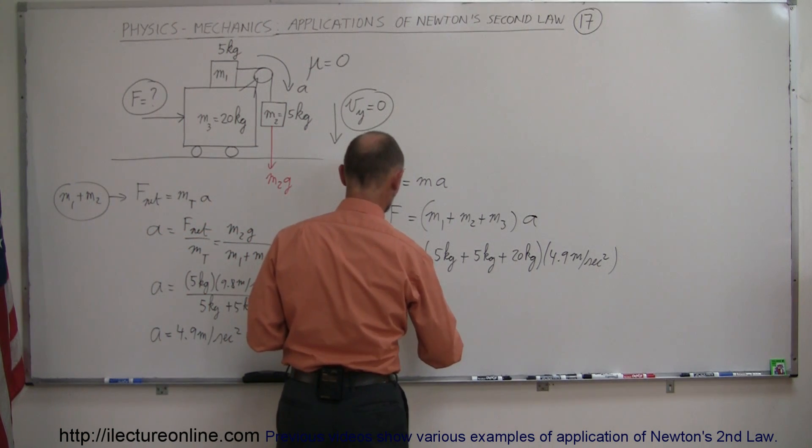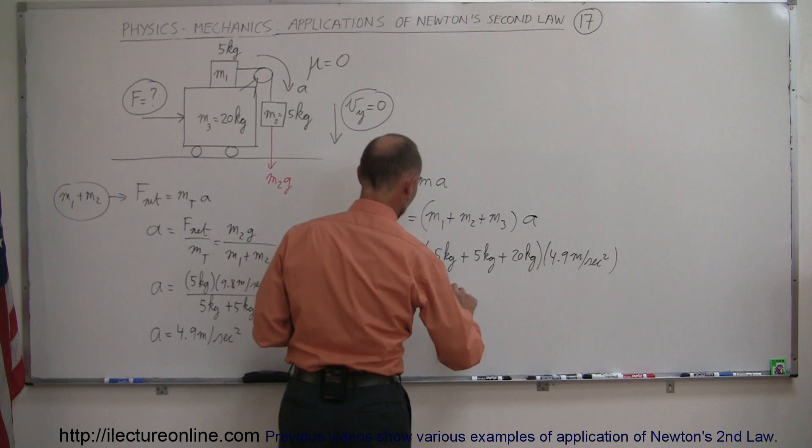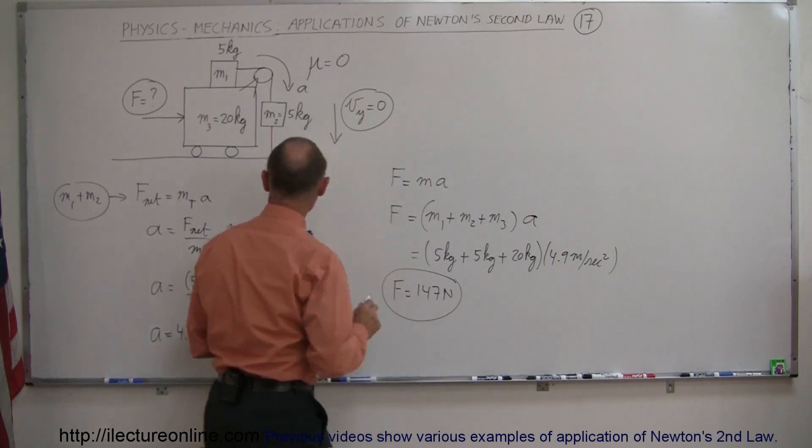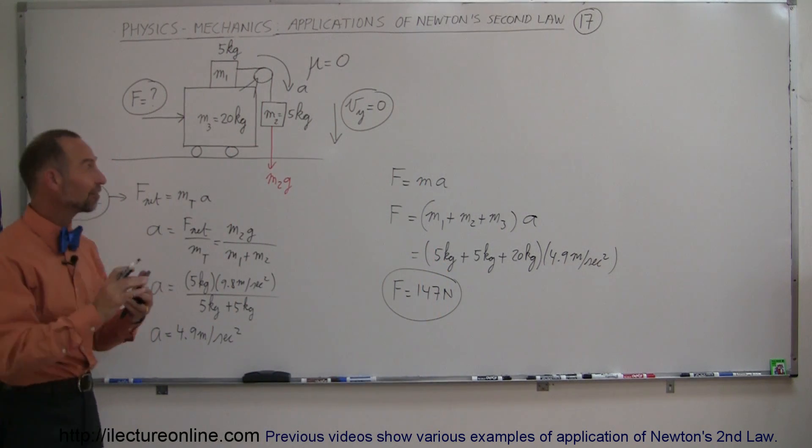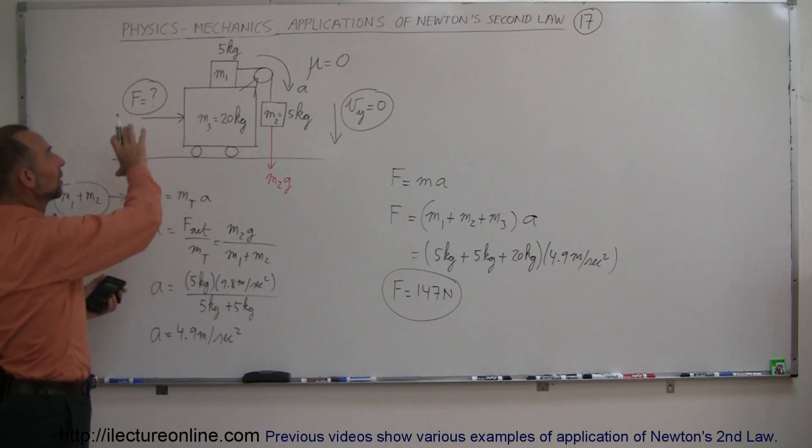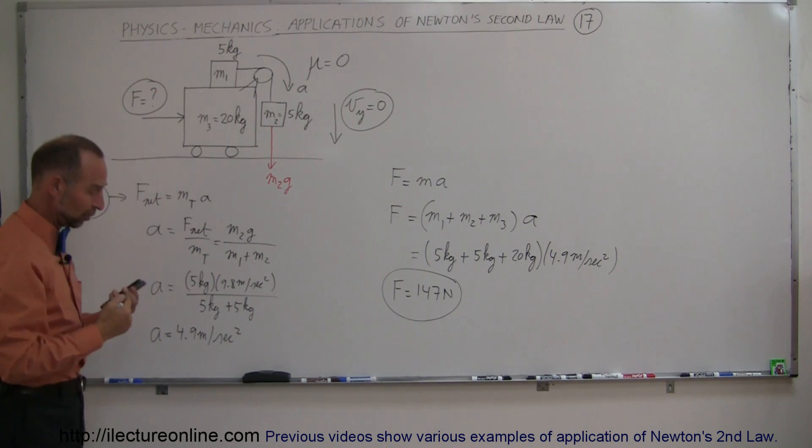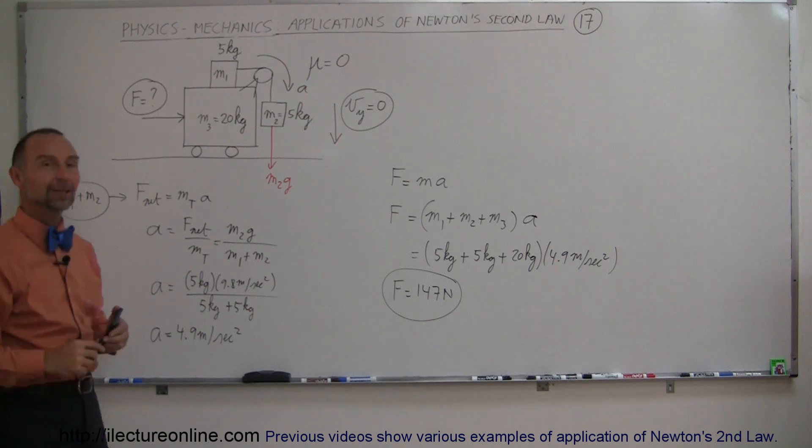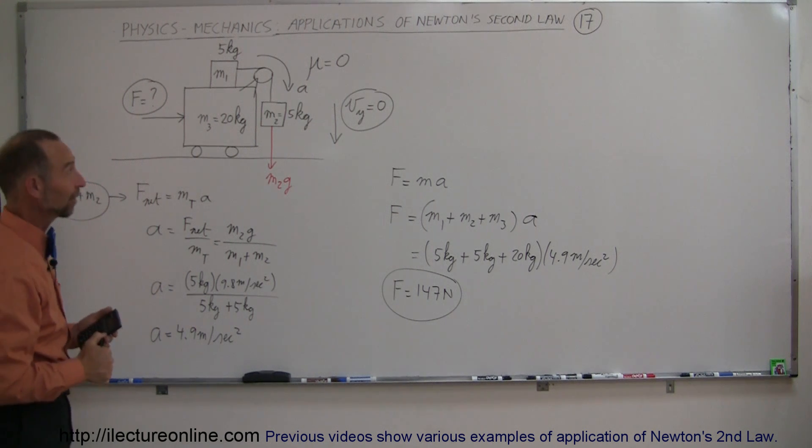So when the force is equal to 147 newtons, almost miraculously M2 will just sit there suspended from the string, not move downward, and M1 will sit on top of M3 and everything will accelerate to the right at 4.9 meters per second squared. And that's how you do that problem.